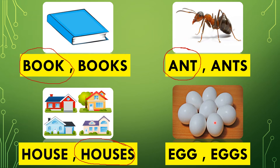So what is this, children? Eggs, isn't it? One egg or many eggs? Many. So which one will we circle — with S or no S? With S, because many eggs are here. That's why our correct answer is E-G-G-S, eggs. We are going to make one circle. So: one book — no S, one ant — no S, many houses — with S, many eggs — with S. Now we will go to the next page.